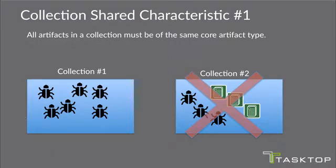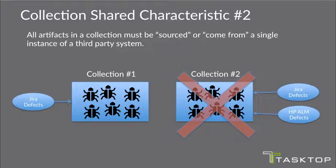Collections have a few key shared characteristics. First, all artifacts in a collection must be of the same core artifact type. As you can see, the collection on the left has only defects, while the collection on the right is not valid because it's trying to have both defects and requirements. Second, all artifacts in a collection must be sourced from a single instance of a third-party system. On the left we have a collection being fed from JIRA; on the right, a collection trying to feed defects from both JIRA and HP at the same time — not valid.